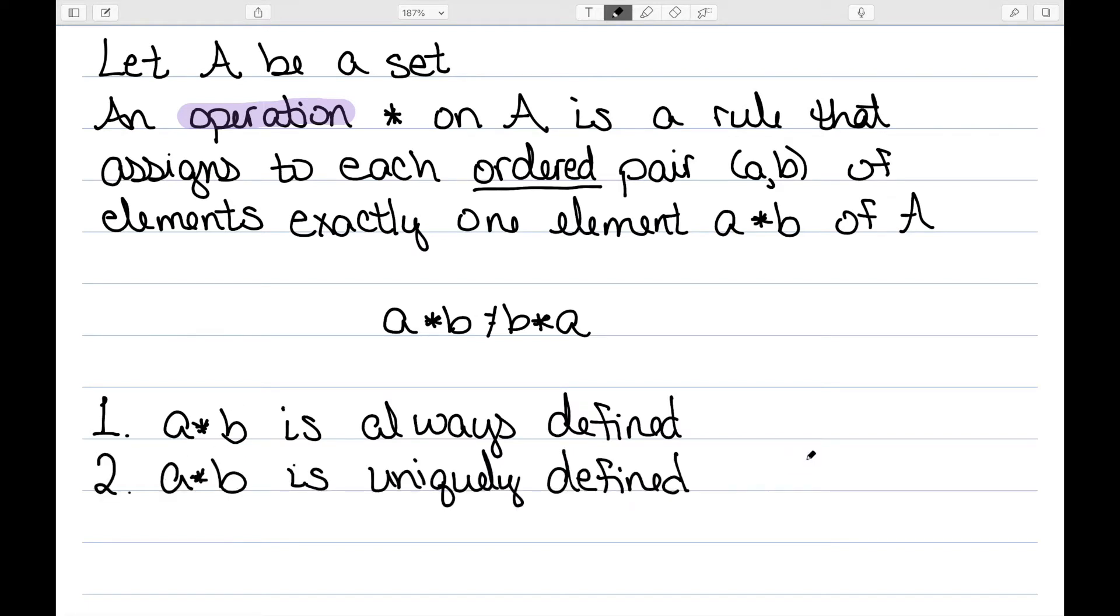The second thing, it should be uniquely defined. If I give you two inputs, you should be able to get a unique output. It should be impossible to get two possible outputs for your given input.